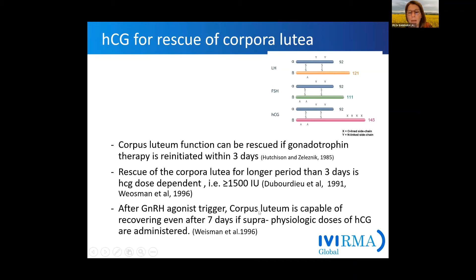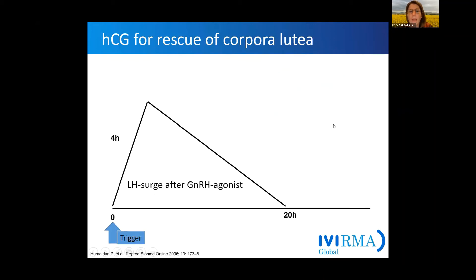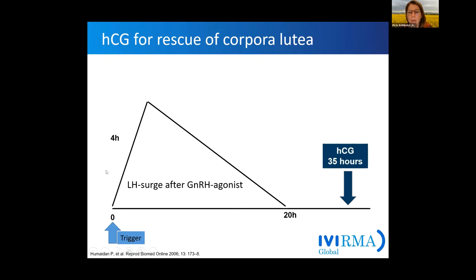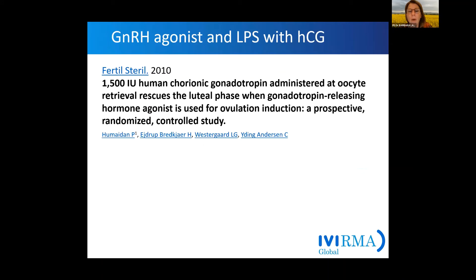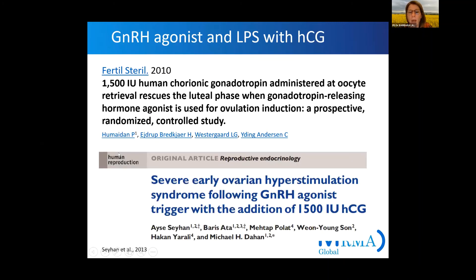However, we have to take into account that we are at risk for hyperstimulation in these patients. The group of Haim Humaidan developed a protocol where they triggered with a GnRH agonist and then 35 hours later gave additional hCG to rescue the corpus luteum luteal phase. With this approach, the good thing was that pregnancy rates were the same; however, other groups described severe early hyperstimulation syndrome with this approach.